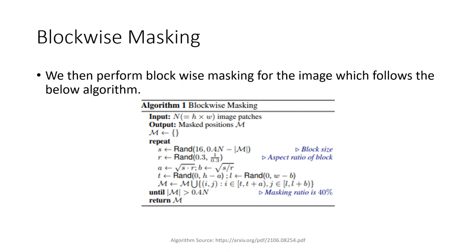Next, we perform blockwise masking. The blockwise masking algorithm is outlined in Algorithm 1. Unlike in BERT, we do not perform random masking. In BEIT, we perform blockwise masking as it is proved to be more effective for images. In the algorithm, we set the minimum number of patches to be 16, then randomly choose an aspect ratio for the masking block. We repeat this process until we obtain masked patches of about 40%.